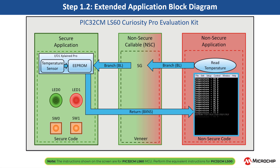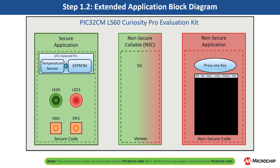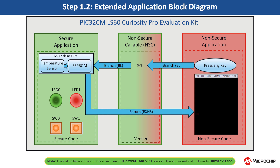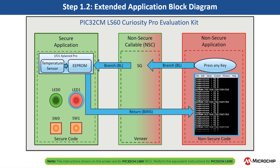The non-secure mode application requests temperature values from the secure mode application and prints them on a serial console. When it receives a key press request from the user on the serial console, it requests the secure mode application to retrieve the last 5 stored temperature values from the EEPROM, and prints them on the console. Also, a red LED1 is toggled every time temperature values are read from EEPROM.